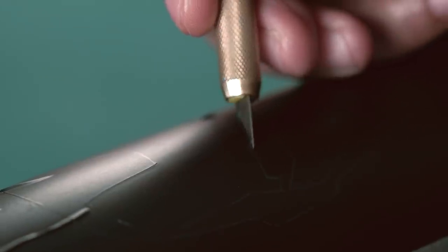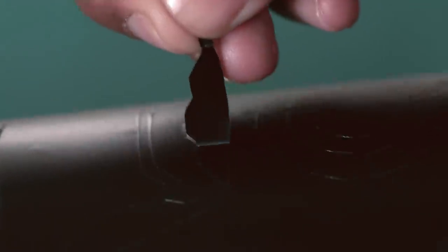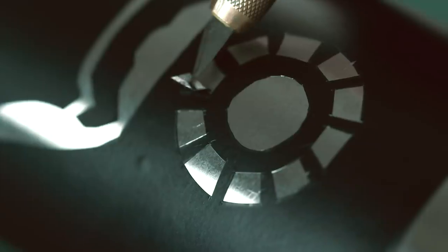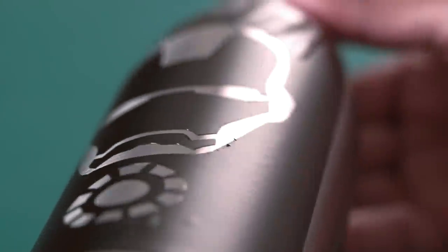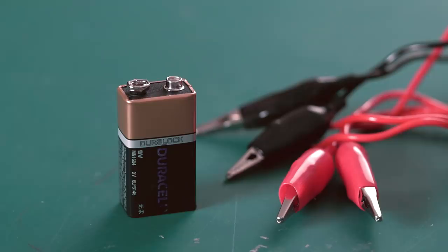So, be careful. The vinyl sheet is pretty thin, so it cuts very easily. Okay, so I'm done cutting the stencil. As you can see, our stencil is now ready. Looks pretty clean.